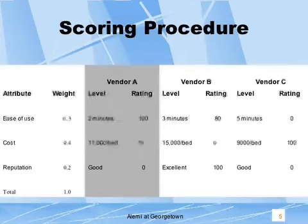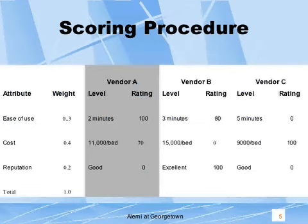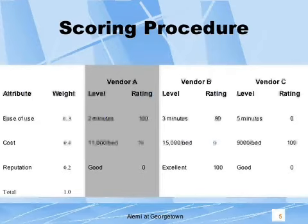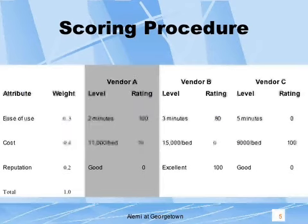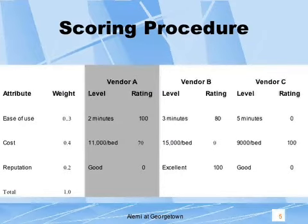In this example, cost is the most important attribute with a value of 0.4. Ease of use is the next most important attribute, and reputation is considered least important among the three. Note that the weights are organized so that they sum to one. Vendor A takes two minutes to enter the standardized cases, which is best in ease of use and therefore is assigned a rating of 100. Vendor C does the worst on this attribute and is assigned a rating of 0.